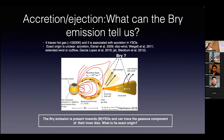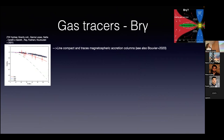So far all interferometry studies have been focusing on the Brackett gamma line because this is the main line we see. I will mention other lines further on, but this was the first result where with interferometry we could directly resolve the inner disk of PW Hydrae and show that the Brackett gamma line traces the magnetospheric accretion columns — a really nice result.